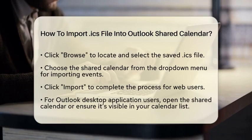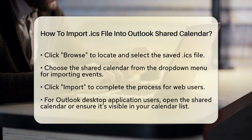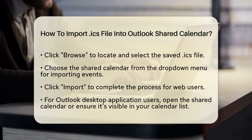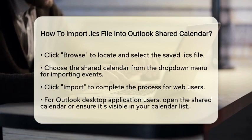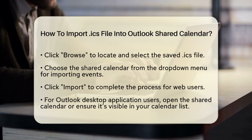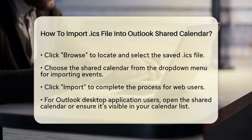Now, let's get to the importing part. If you are using Outlook on the web or Office 365, here is what you need to do. First, select the option that says Add Calendar, then choose Upload from File. Click on Browse to locate the ICS file you saved earlier and select Open. You will then see a drop-down menu under Calendar — use this to choose the shared calendar where you want to import the events. Finally, click Import to complete the process.